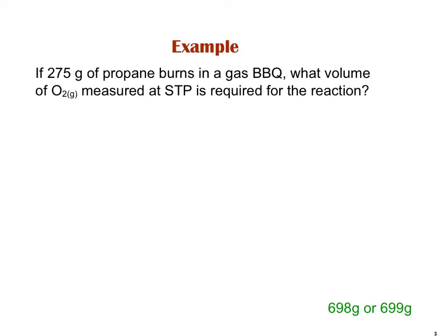So, balanced chemical equation here. Propane is C3H8 gas, and O2 gas makes CO2 gas and H2O gas. Balancing, I need a 3, a 4. There's 10 oxygens on one side, so I need 5 O2s.